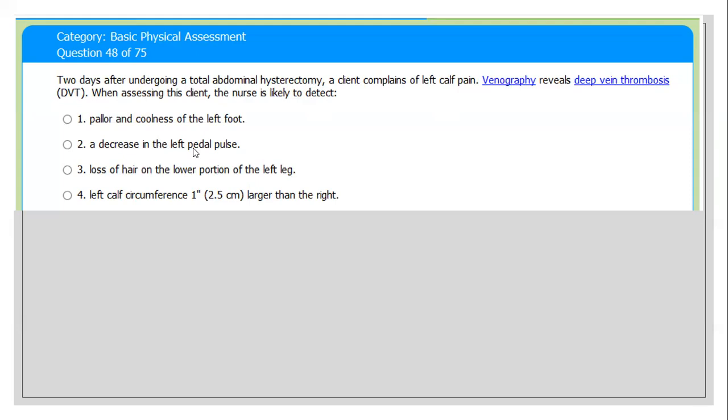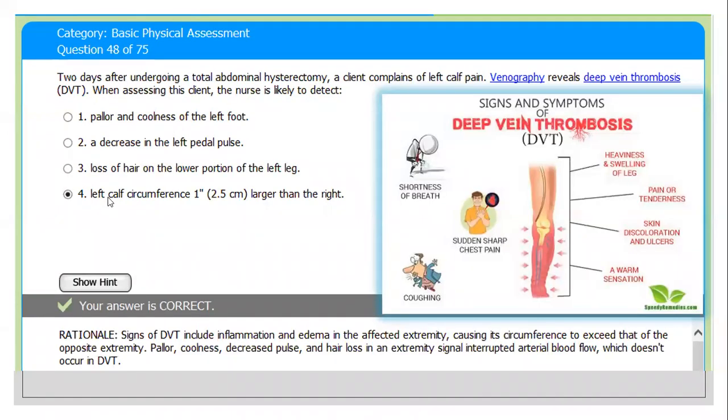Number one: pallor and coolness of the left foot. Number two: decreased left pedal pulses. Number three: loss of hair on the lower portion. Number four: left calf circumference larger than the right. Number three is never the answer because deep vein thrombosis develops because of immobilization, it's not a chronic disease. Loss of hair on the lower portion should be from longstanding disease like gangrene, ulcer, peripheral vascular disease. The best response: left calf circumference larger than the right.